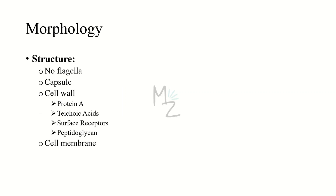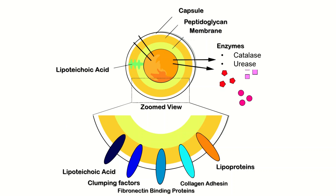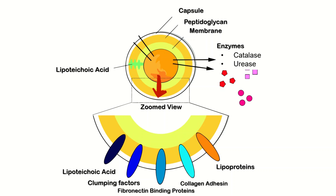Structure: this bacterium has no motility apparatus like flagella. It has a capsule — the protective covering around any bacteria. It has a cell wall with components and antigens like protein A, teichoic acid, surface receptors, and a peptidoglycan layer, as well as a cell membrane. It also has enzymes like catalase and urease, and lipoteichoic acid present in the cell wall. Zooming in, it has lipoteichoic acids, clumping factors, fibronectin binding protein, collagen adhesins, and lipoproteins.